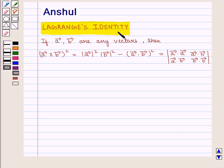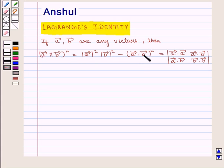Lagrange's identity states that if A and B are any vectors, then |A × B|² is equal to |A|² · |B|² minus (A · B)², which can also be written in the determinant form as the determinant containing elements A·A, A·B, A·B, B·B.